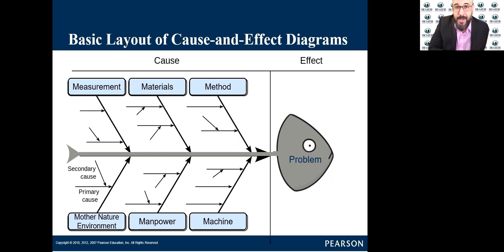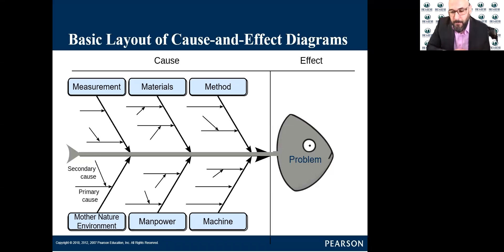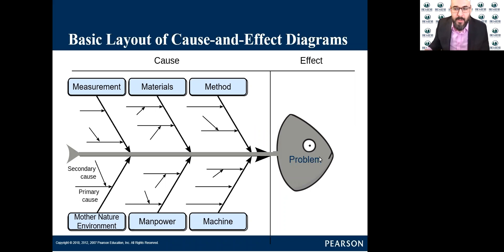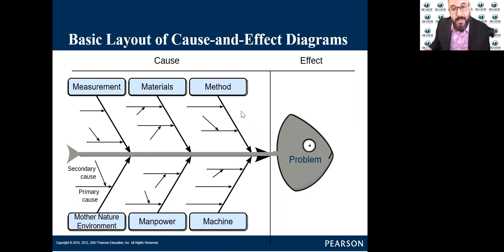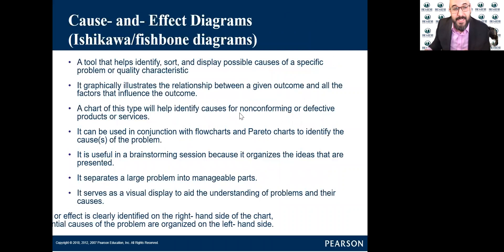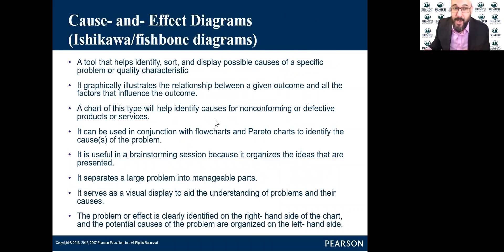So there are three names for this diagram that all refer to the same tool. This tool will be very helpful for the team because it will guide them to the root cause of any problem. The fishbone diagram, or cause and effect diagram, looks like a fish skeleton where you see the head — which represents the effect — and the causes will be on the left side.